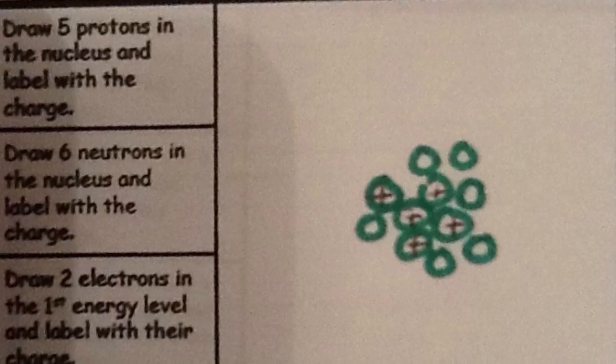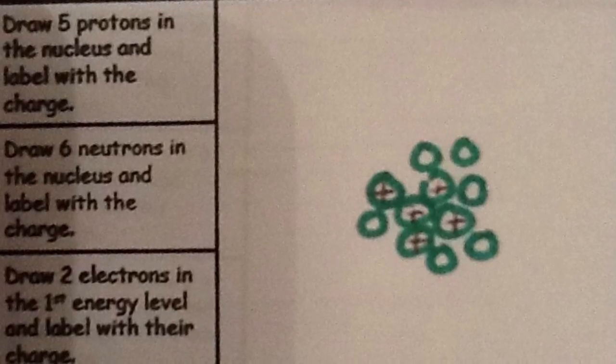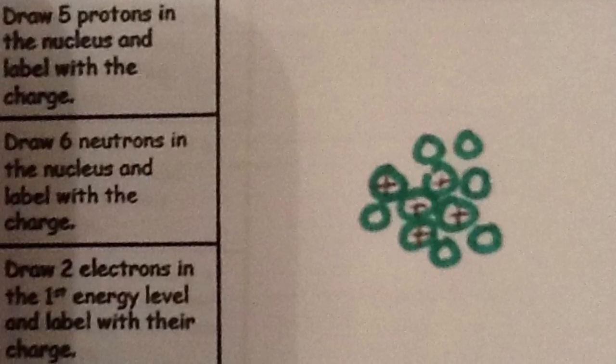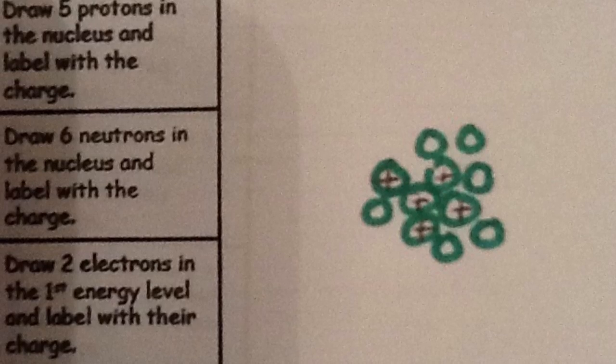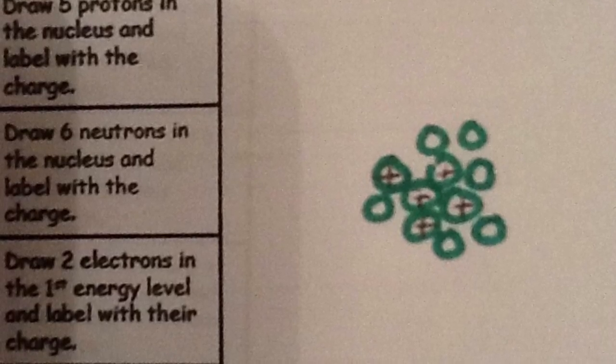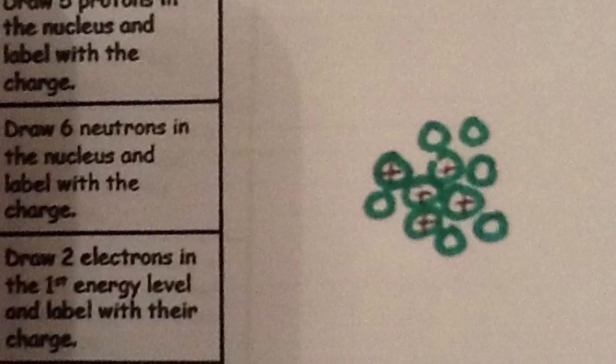Draw six neutrons in the nucleus and label with the charge. I've drawn six circles inside my nucleus but I have not labeled them with anything as the neutrons have no charge. Sometimes you may see them labeled with an N or a zero. I just like to leave mine blank.